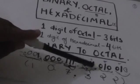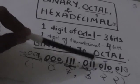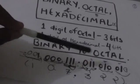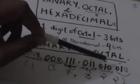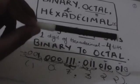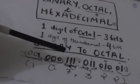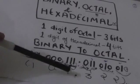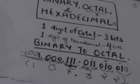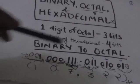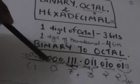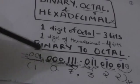Now we have to write an octal number corresponding to each group. Look at this group: 0 1 1 — this binary number represents a value of 3, so the octal equivalent is 3. This group represents a value of 2, so the octal equivalent is 2. This group represents a value of 7, so the octal equivalent is 7. The position of the radix point will remain the same.